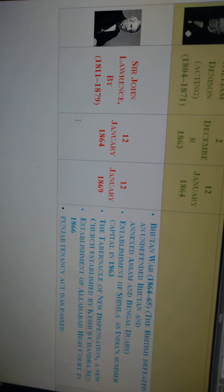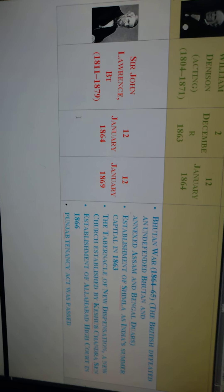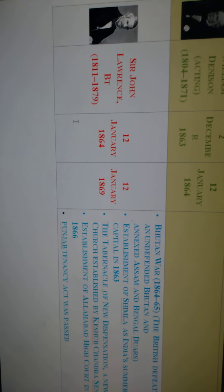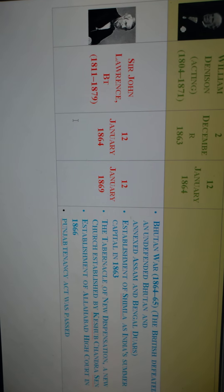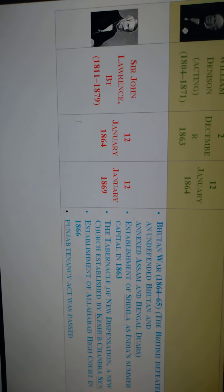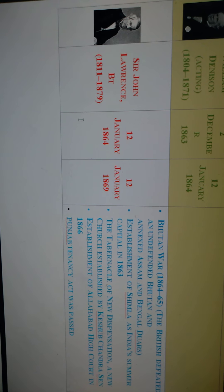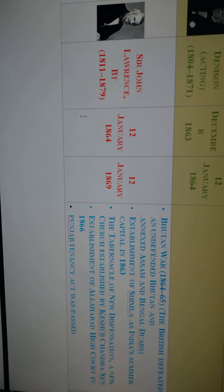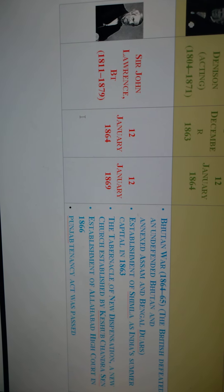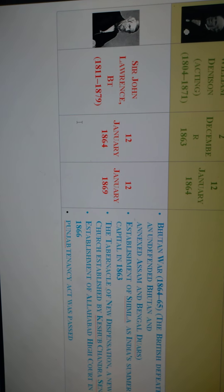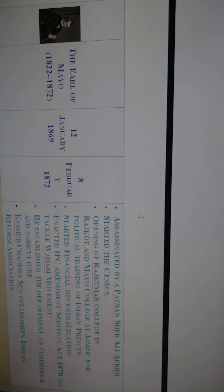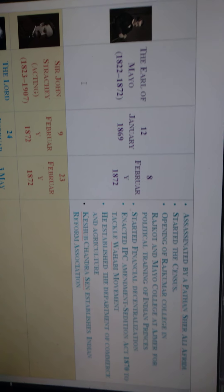Sir John Lawrence established Simla in Himachal Pradesh as India's summer capital in 1863. During his period, Keshub Chandrasen established the Tabernacle of New Dispensation, a new church. The Allahabad High Court was also established in 1866 during Sir John Lawrence's period, and the Punjab Tenancy Act was also passed by him.